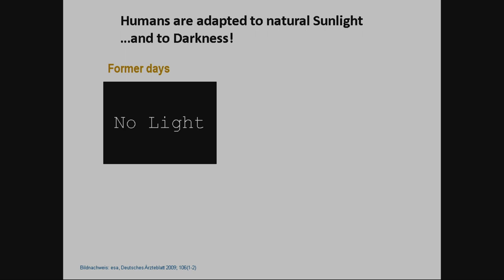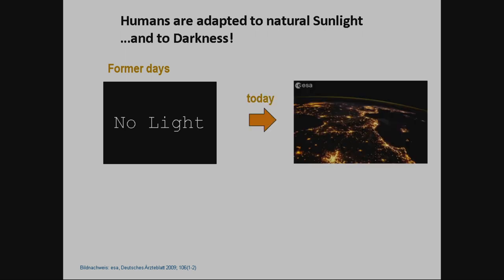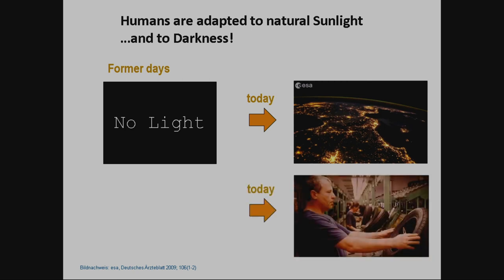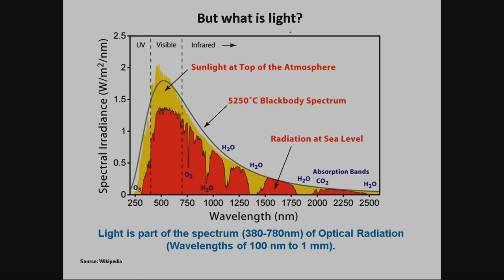In former days we had just candles, and then they were out, and then it was dark. Today we have different situations — we have lights during the night all the time, 24-7, and we have shift work. All these workers in shift work have severe health problems. We try to deal with it, but one solution could be light — the right light at the right time. And this is actually the essence of human-centric lighting.